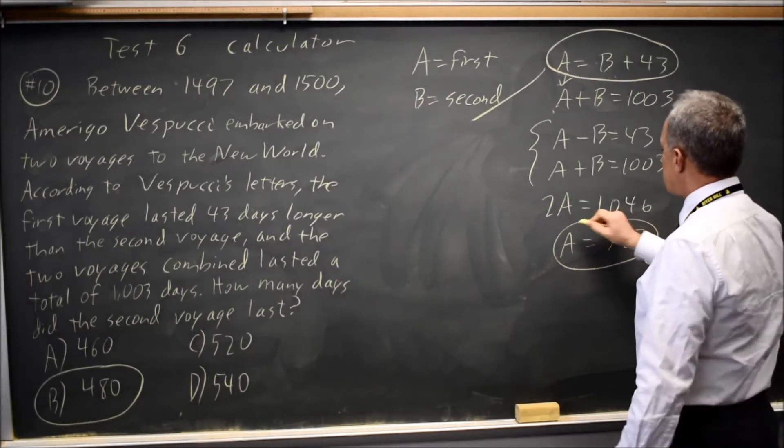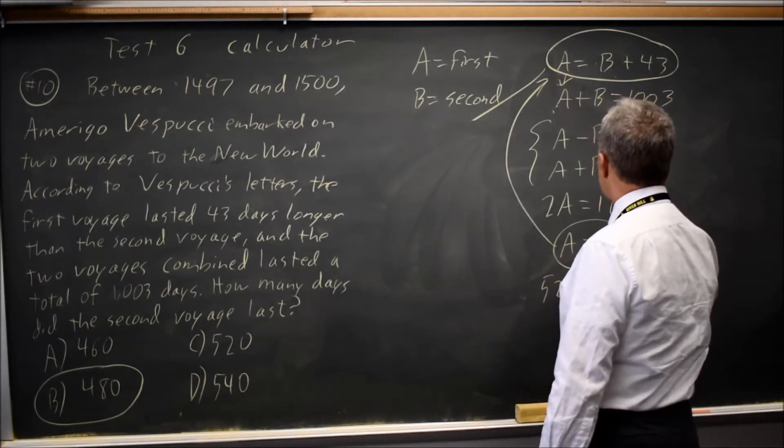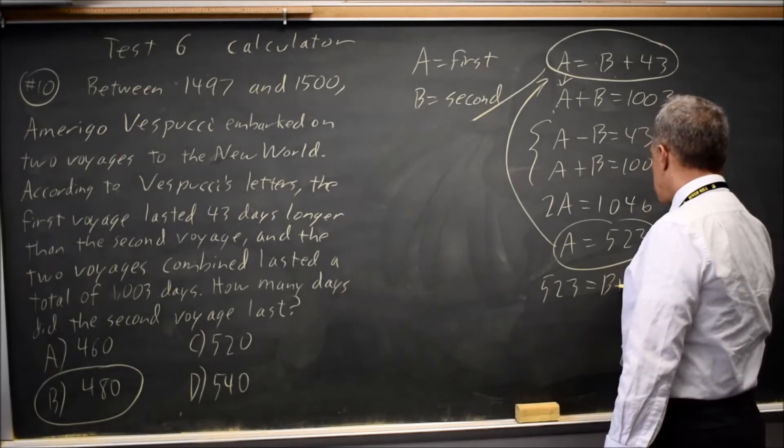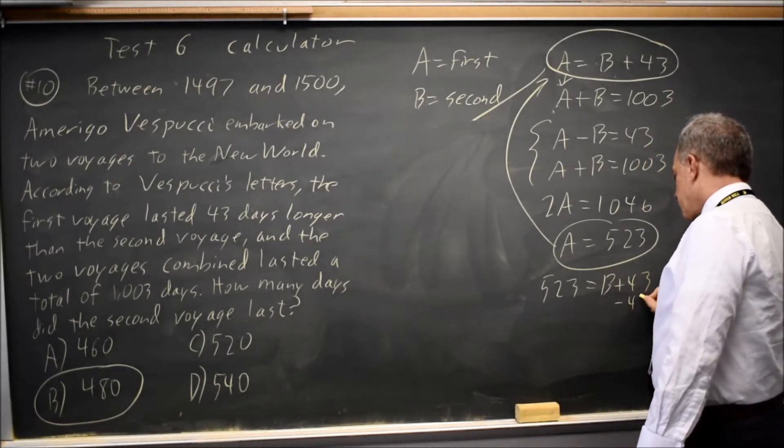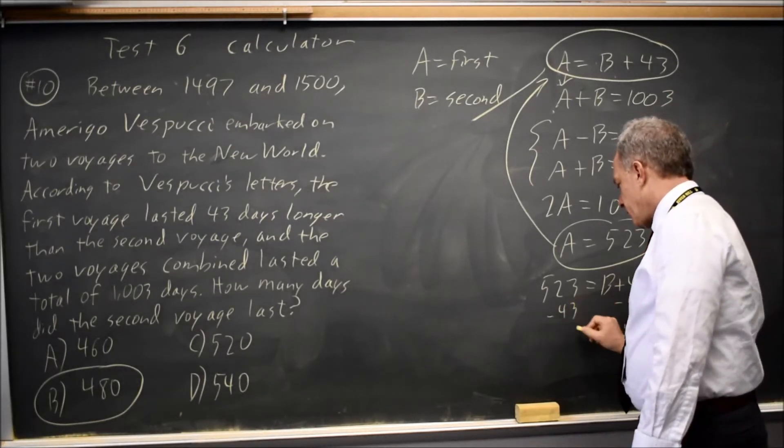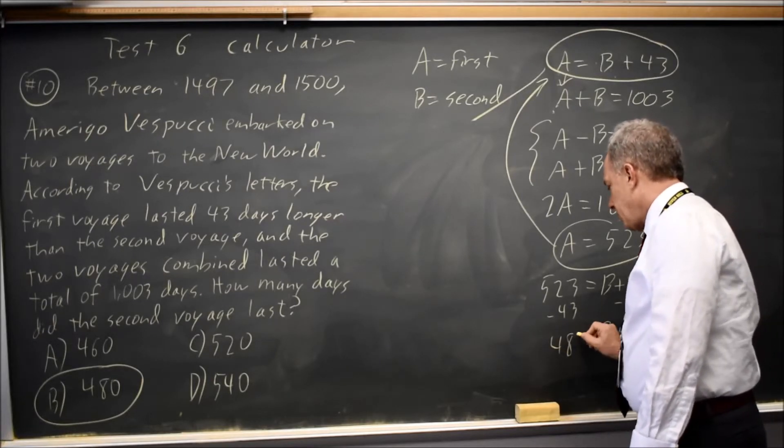Substitute that in to my first equation. 523 equals B plus 43. Subtract 43 from both sides, and I get B equals 480.